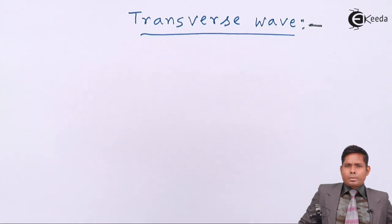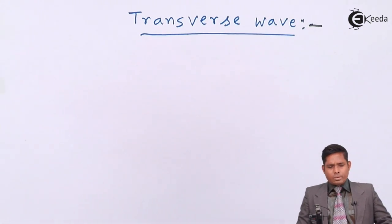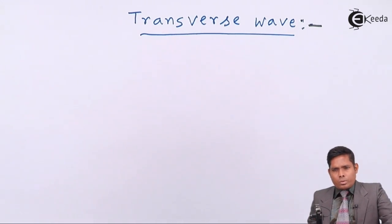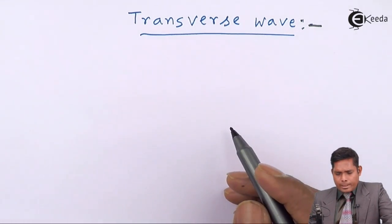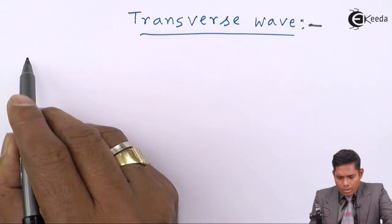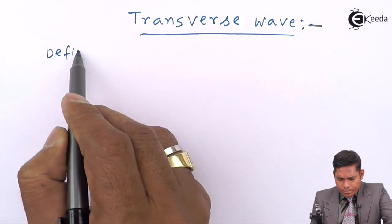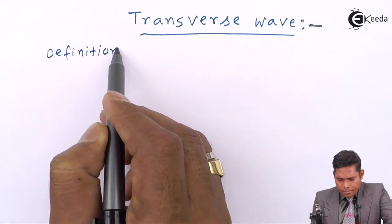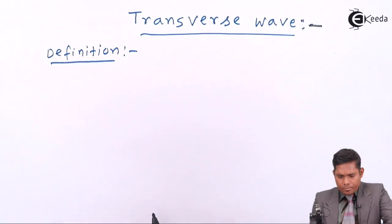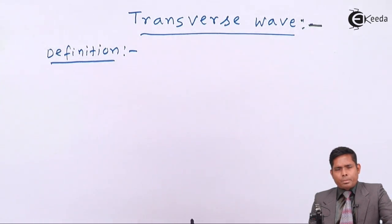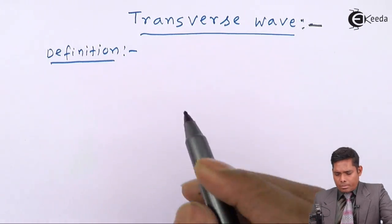We will write the characteristics of transverse wave. The first point is the definition: when the particles of the medium vibrate perpendicular to the direction of propagation of the wave, the wave is called a transverse wave.